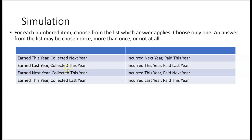What was earned last year and collected this year? That would be beginning accounts receivable. What was earned next year and collected this year? That would be the ending balance of unearned revenue. Unearned revenue is a current liability and represents amounts collected this year that will be earned next year.